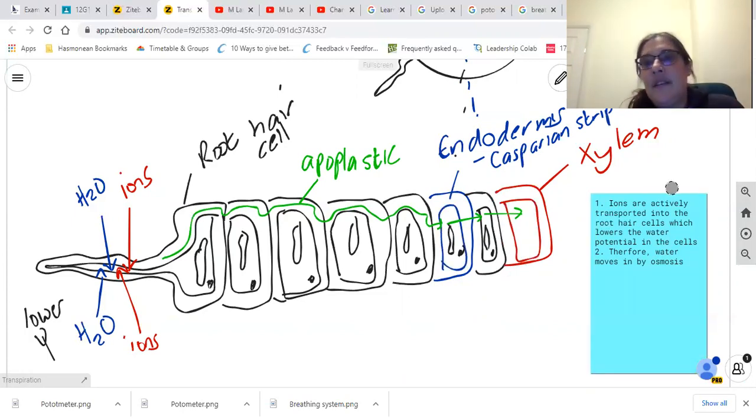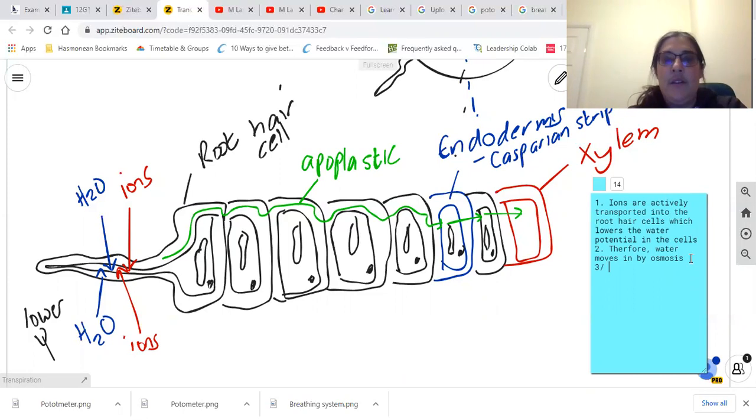We can summarize that by saying some of the water moves via the apoplastic pathway, which is cell wall to cell wall, until it reaches a Casparian strip in the endodermis.